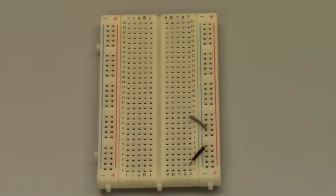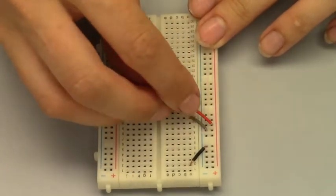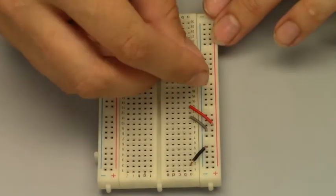Moving down the breadboard, next up is connecting positive to A13. Link column negative to A22 and then negative to A29.